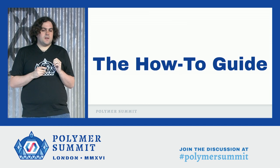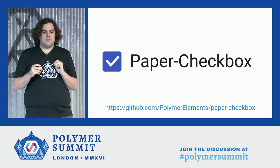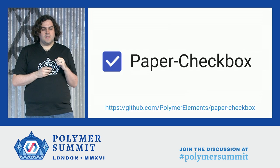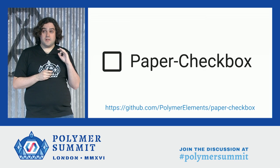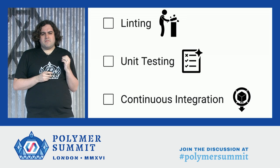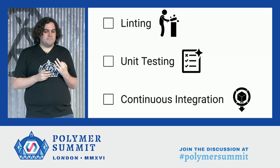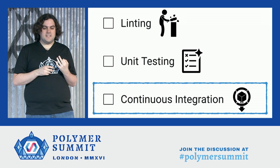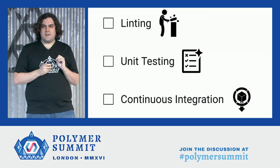Since there's so much to talk about today, I've condensed it into this easy how-to guide. As part of this guide, we'll be taking a look at Paper Checkbox — that link at the bottom will take you to the repository so you can get a good look at the tools we use on our production-ready elements. The main focus of this guide is really about testing, and in particular these three areas: linting, unit testing, and continuous integration.